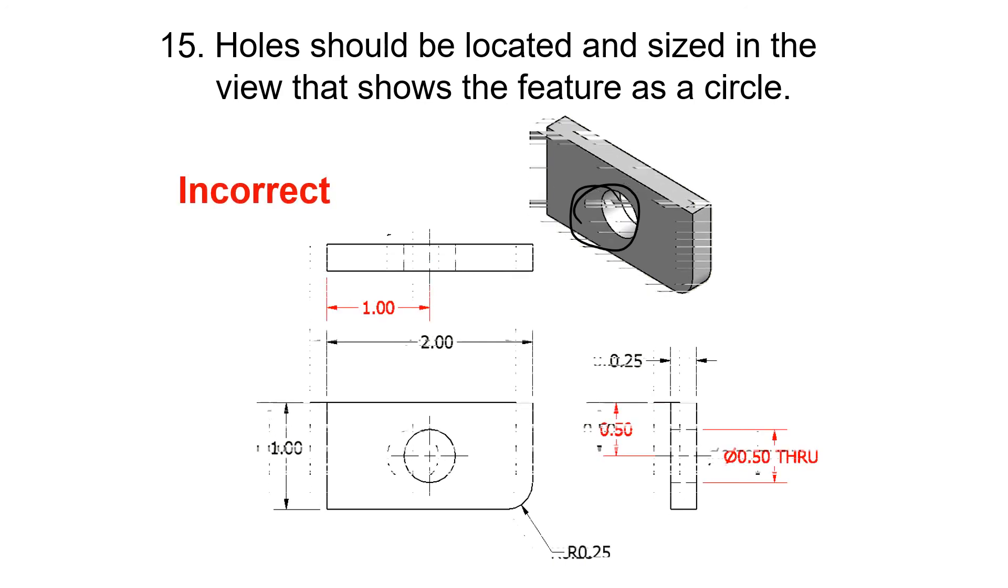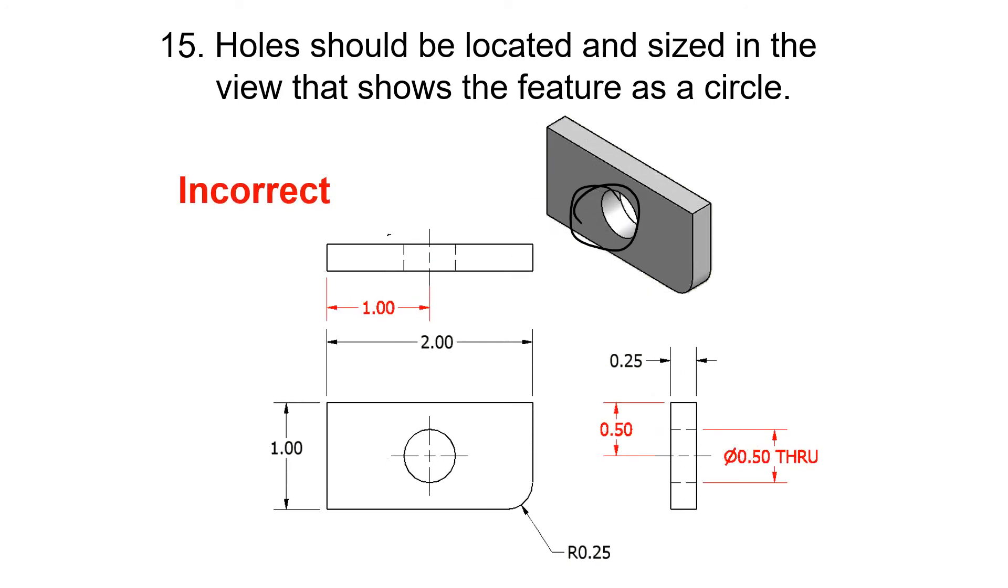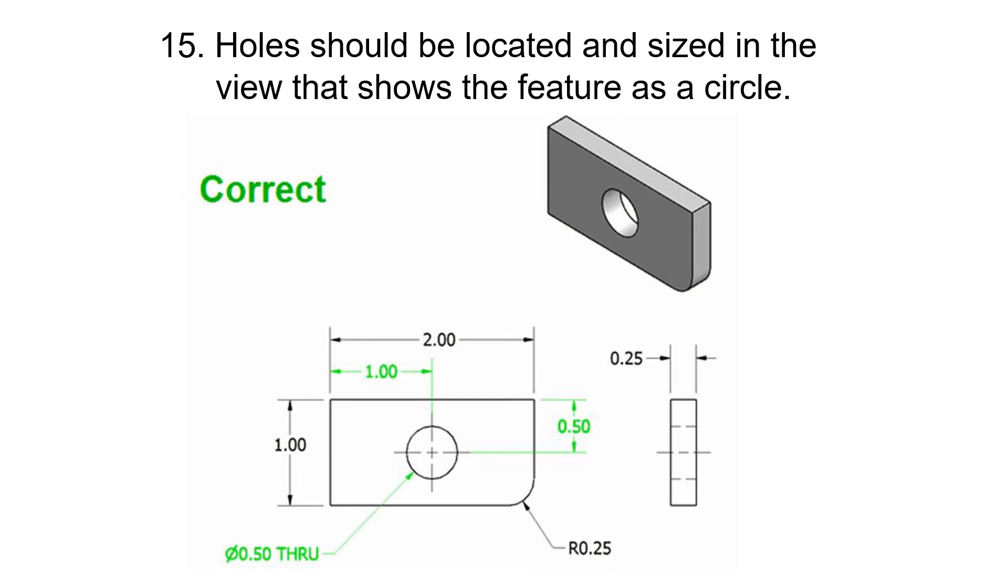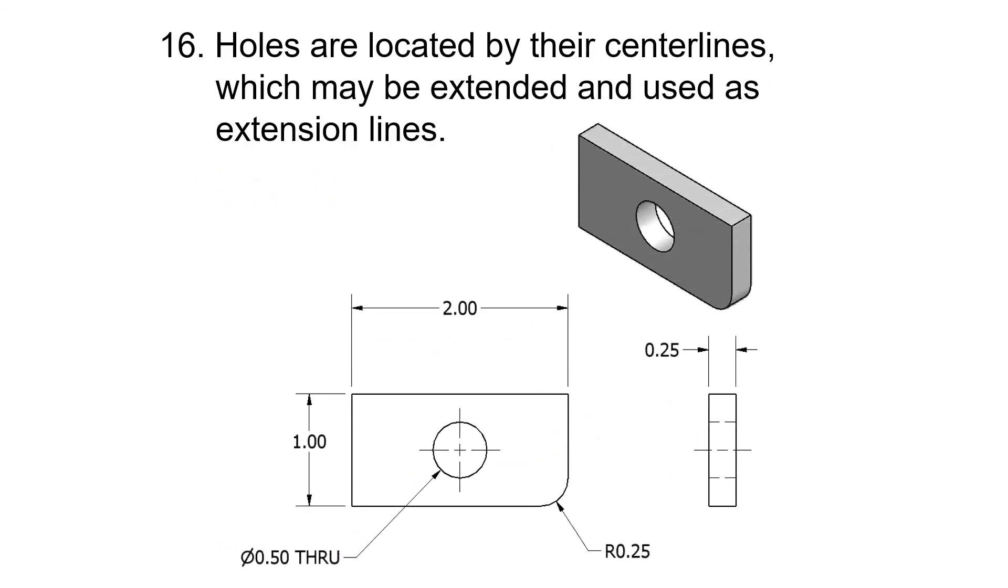First of all, you don't want to dimension to a hidden line. Second of all, you want to dimension to the hole where it looks like a circle, and it looks like a circle on the front view. Holes are located by their center lines, which may be extended and used as extension lines. It should look like this.